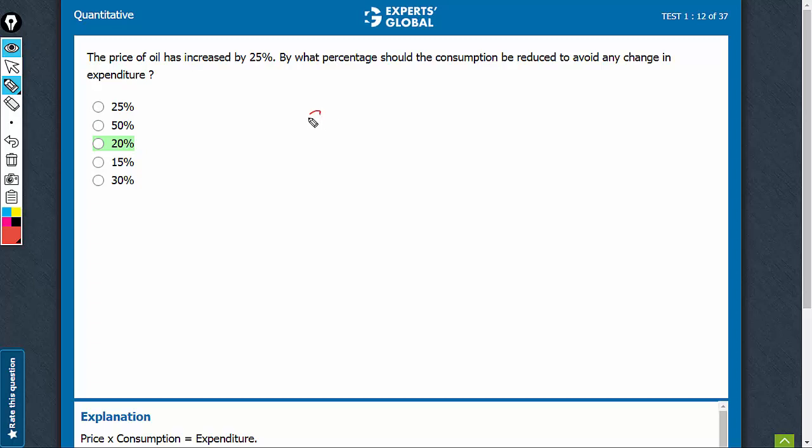We have to relate three things: expenditure, price, and consumption. Of course, the relationship is very clear. Expenditure is equal to price times consumption.